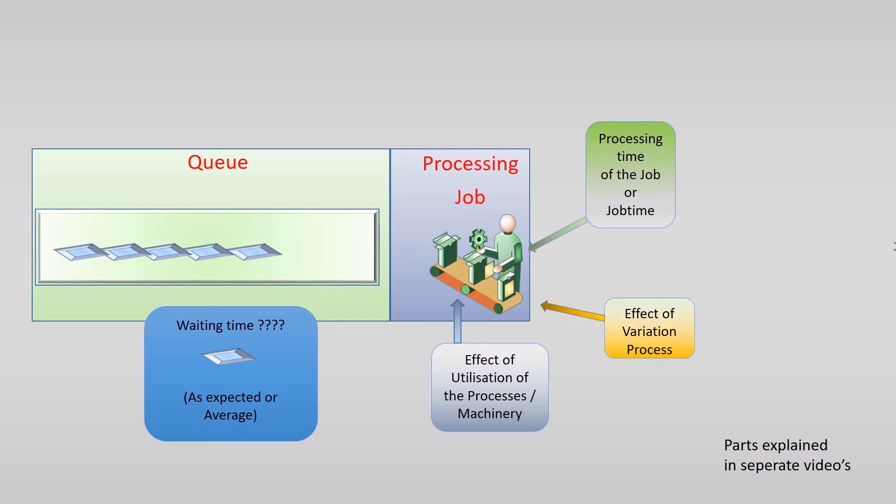The third part of the equation is variation. Suppose the process usually takes 5 minutes and you expect this to be the case on average. If the job takes longer, the waiting time rises, but if it takes shorter, it is not always possible to start the next job. The more the real processing times differ from the expected average time, the more the queue will be affected and this means it will be longer.